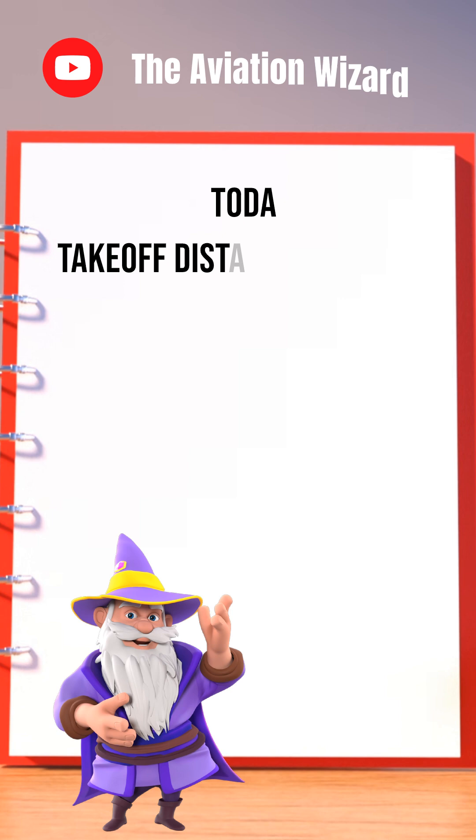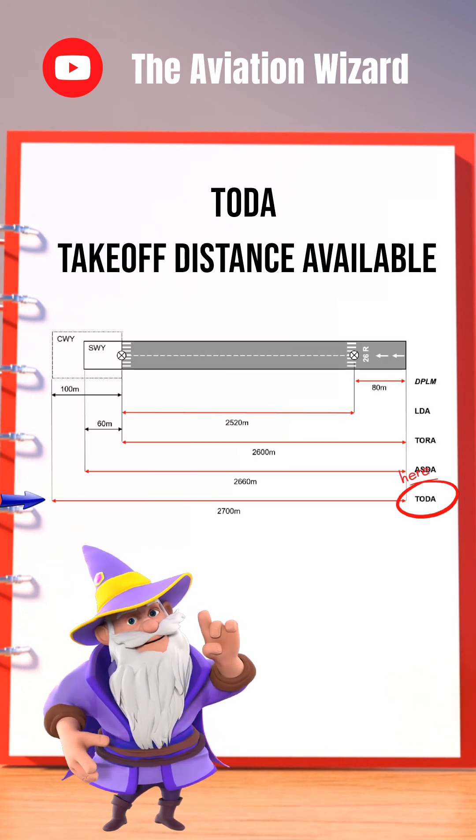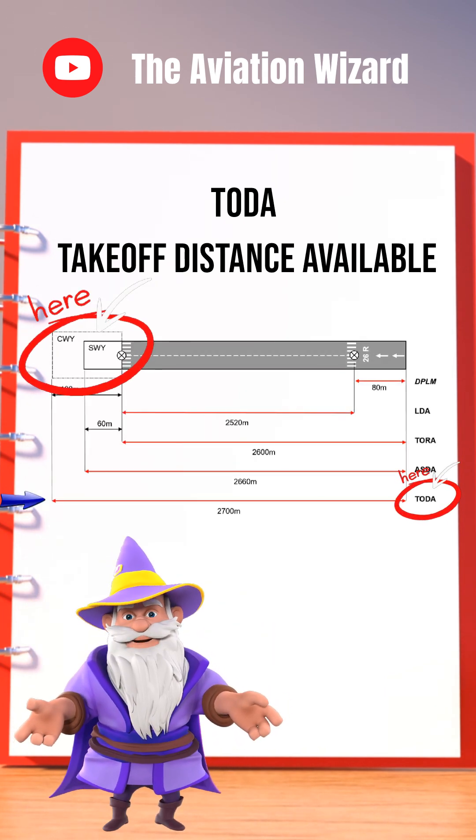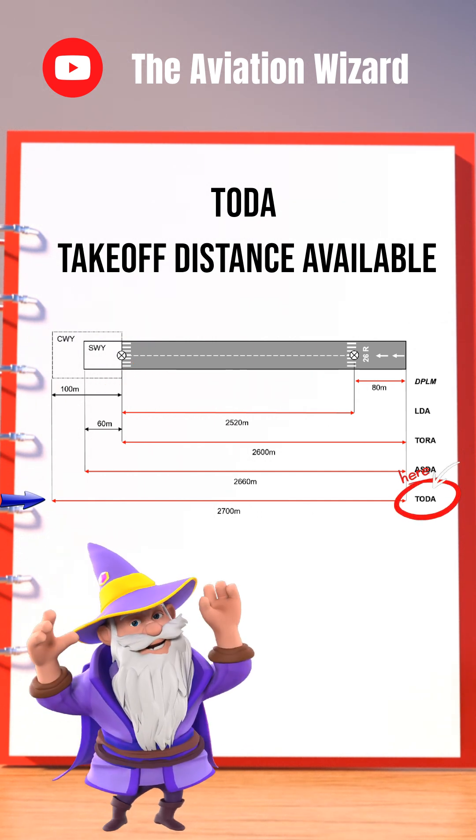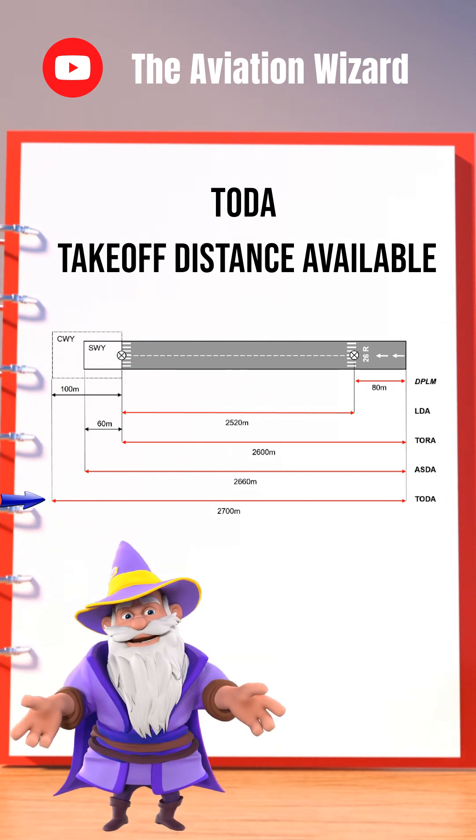TODA is the total distance available for the takeoff run, plus the length of any clearway beyond the runway. The clearway allows the aircraft to climb safely in case of engine failure right after takeoff.